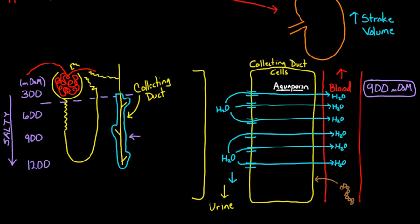If the volume of blood goes up, it's going to create a larger stroke volume for the heart. That's specifically how the stroke volume goes up.